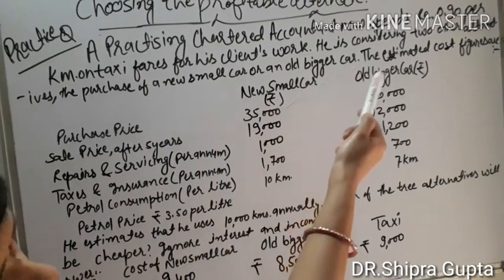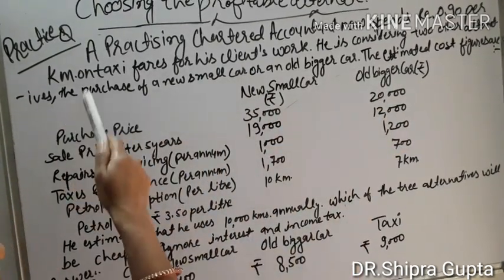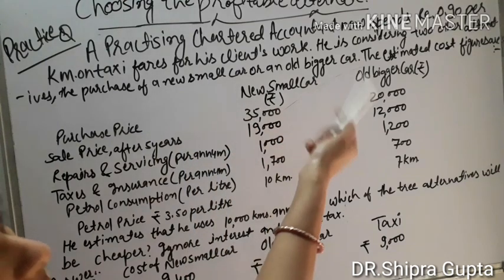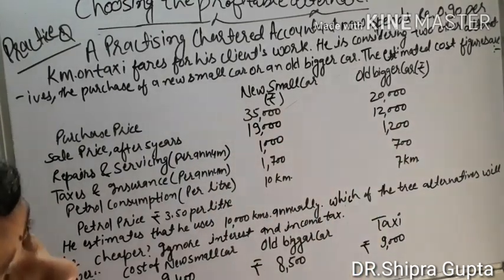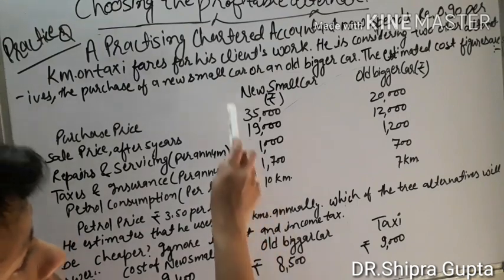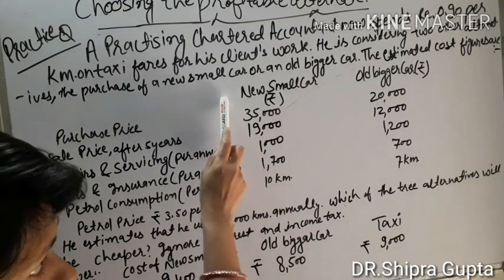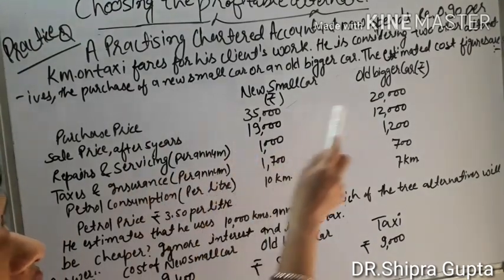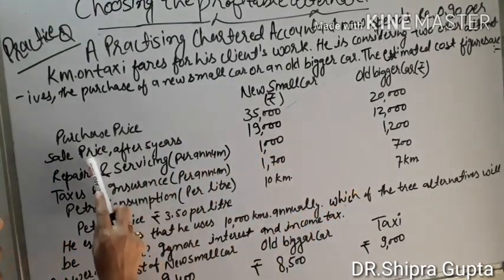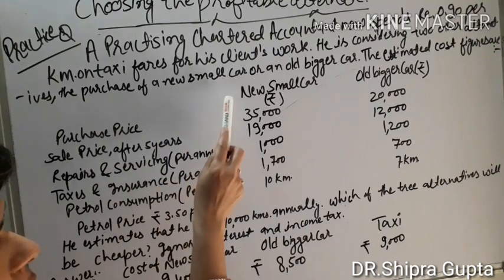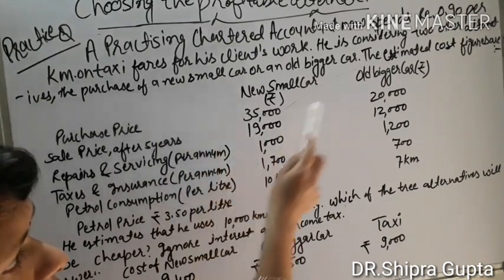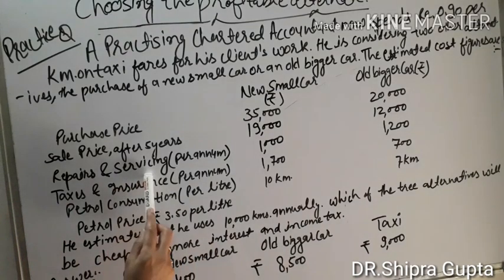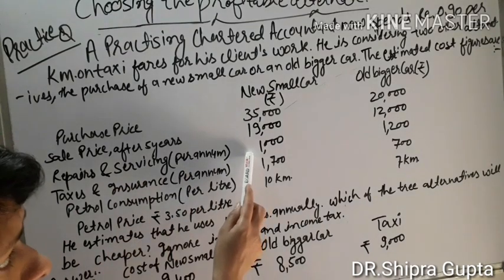The question is: a practicing chartered accountant now spends rupees 0.90 per kilometer on taxi fares for his client work. He is considering two other alternatives — the purchase of a new small car or an old bigger car. The estimated cost figures are: new small car purchase price ₹35,000; old bigger car ₹20,000. Sale price after 5 years: new small car ₹19,000; old bigger car ₹12,000.